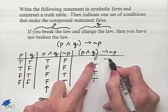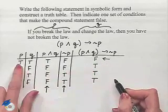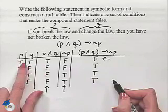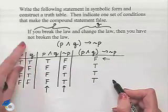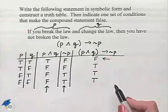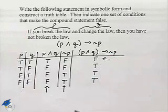So notice that occurs in our first row. If P and Q are both true, then we end up with this statement being false, and so those would be the set of conditions that would make the compound statement false.